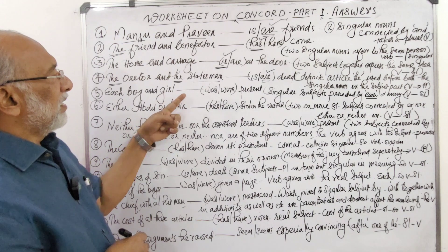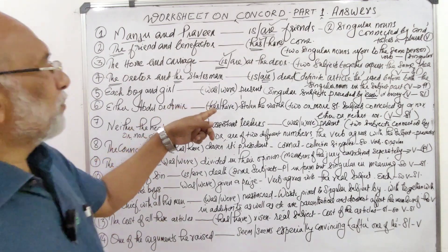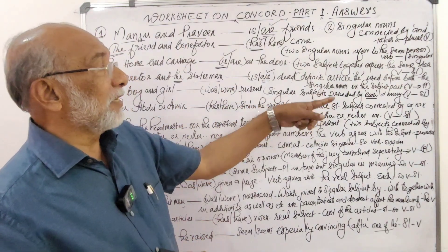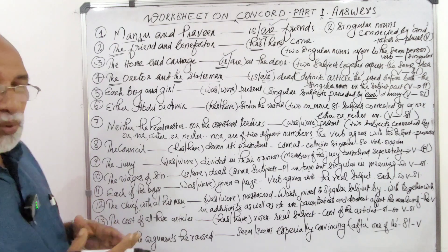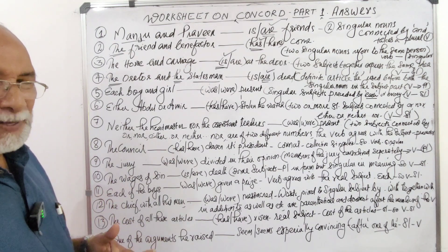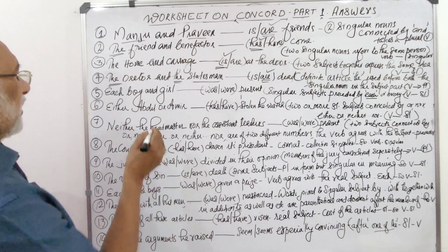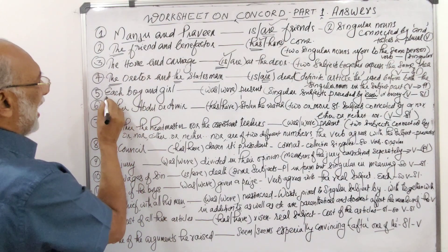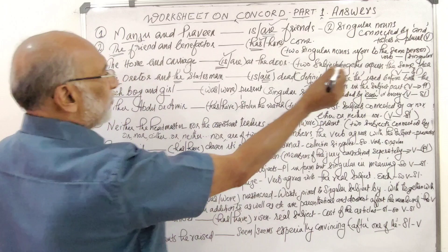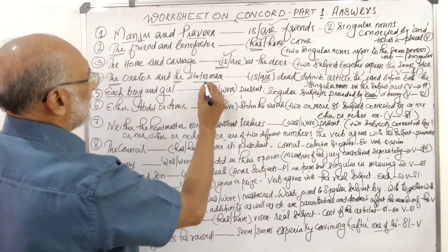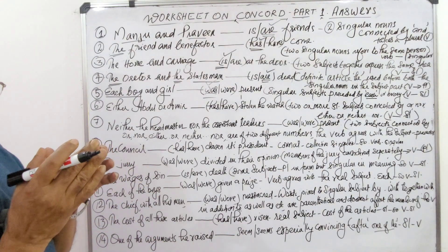Question 5: 'Each boy and girl was/were present.' The answer is 'was present.' When a singular subject is preceded by 'each' or 'every,' the verb should be singular. Words like each, anyone, no one, nobody, anybody, somebody, someone, none — all take a singular verb. So 'each boy and girl was present,' meaning we consider each one separately.